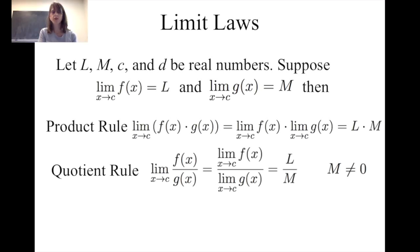If I have a quotient of two functions f of x divided by g of x and I want to consider what happens as x is close to c, I can simply say that it's the limit of f of x divided by the limit of g of x as x is close to c, provided that m is not equal to zero, or provided that the limit of g of x as x is close to c is not zero.